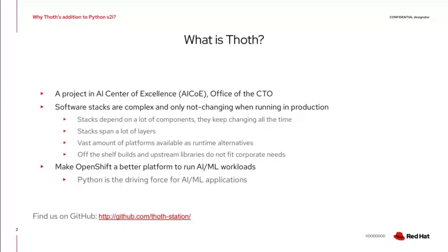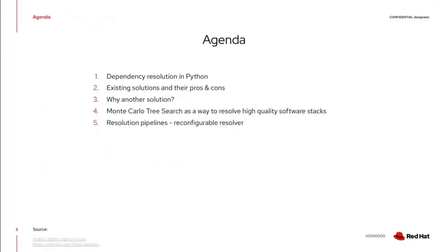Let's move on to the agenda. I will briefly cover dependency resolution in Python to establish basic principles, then show existing solutions with their pros and cons, then explain why we needed another solution. That solution uses Monte Carlo Tree Search, which I'll discuss along with its variation for resolving high quality software stacks, and then we'll plug the algorithm into resolution pipelines.